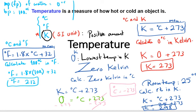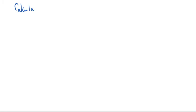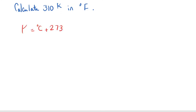To practice multi-step conversions, consider this example: calculate 310 Kelvin in degrees Fahrenheit. We know two equations — K = °C + 273, and °F = 1.8 × °C + 32. There is no direct relationship between Kelvin and Fahrenheit, so we need to use both equations.